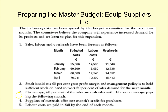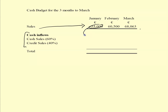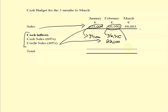Going back to the question, note number three states that on average 60% of sales are cash sales, with debtors on average paying the following month. So 60% cash, 40% will be debtors who pay one month later. Of January sales, 60% comes in as cash in January which is 33,000, and the balance 40% comes in February. Of February sales, 60% comes in February which is 36,300, and the balance 40% comes in March.